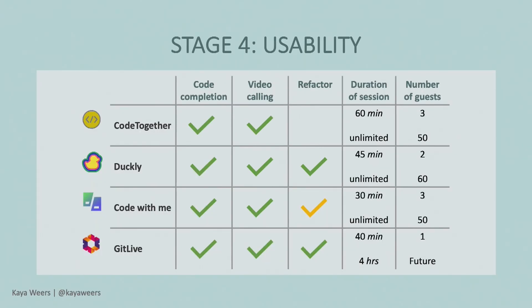Now for refactoring — I want to program like I normally do, using rename, introduce variable, and all those refactoring options inside the IDE. In Code Together, unfortunately most refactoring methods are not yet implemented — only something like "move method" is supported. In Duckly, all the refactoring options I normally use are available. The same is true for GitLive. In Code With Me, about half the options are available — most of the important ones, but some that you'd want to use are missing and have to be done manually.